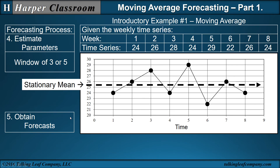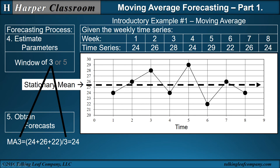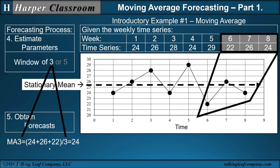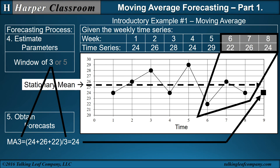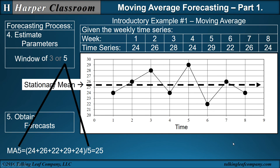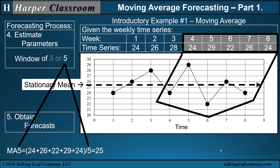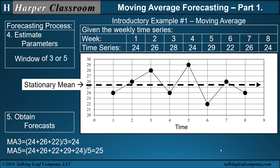Next we obtain our forecasts. If our window is three, then we average the last three values, giving us a forecast of 24. If the window is five, then we average the last five values, and our forecast is 25. Whether our forecast is 24 or 25 depends on the window, which is the parameter. So the forecast depends not only on the technique you use, but also on the parameters that you select.